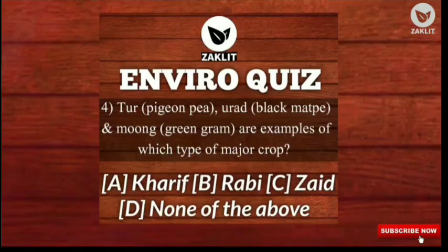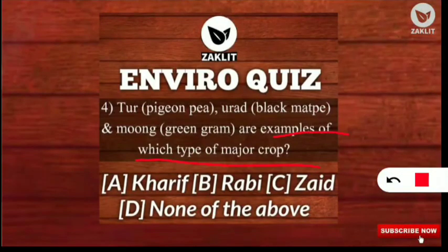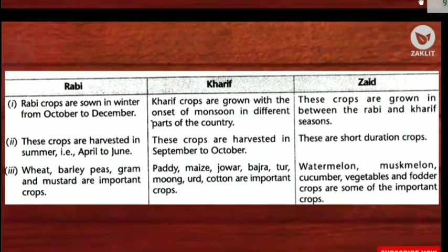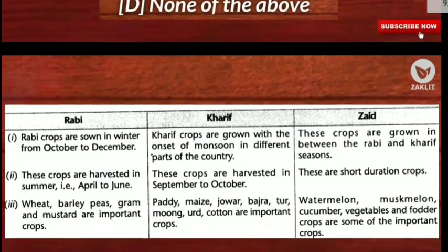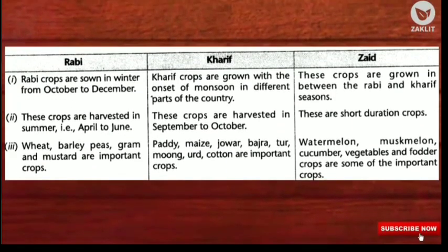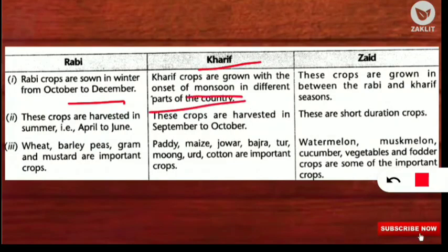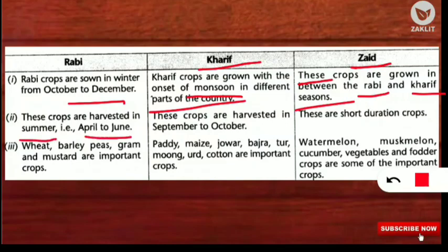The next question: Tur (pigeon pea), Urad (black mat pea), and Moong (green gram) are examples of which type of major crop? These are examples of Kharif crops. Rabi crops are sown in winter (October to December) and harvested in summer (April to June). Kharif crops grow at the onset of monsoon and are harvested in September to October. Zaid crops are short-duration crops grown between the Rabi and Kharif seasons.